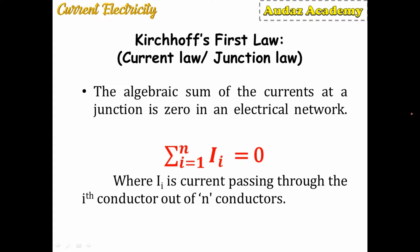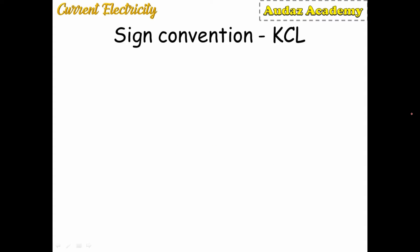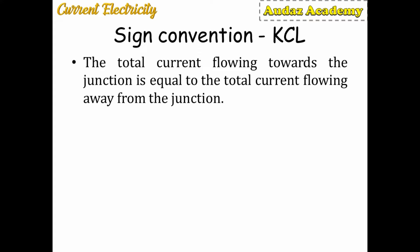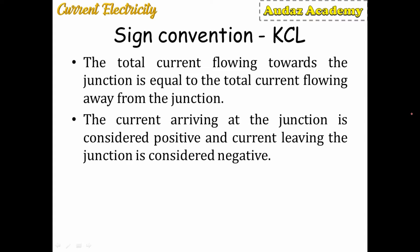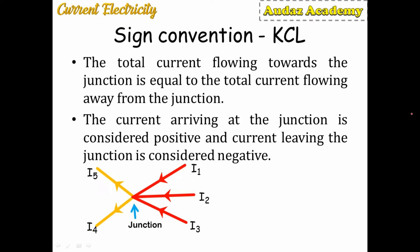To understand how the answer is zero, we need to understand the sign conventions. The total current flowing towards the junction equals the total current flowing away from the junction. Current arriving at the junction is considered positive, and current leaving the junction is considered negative.